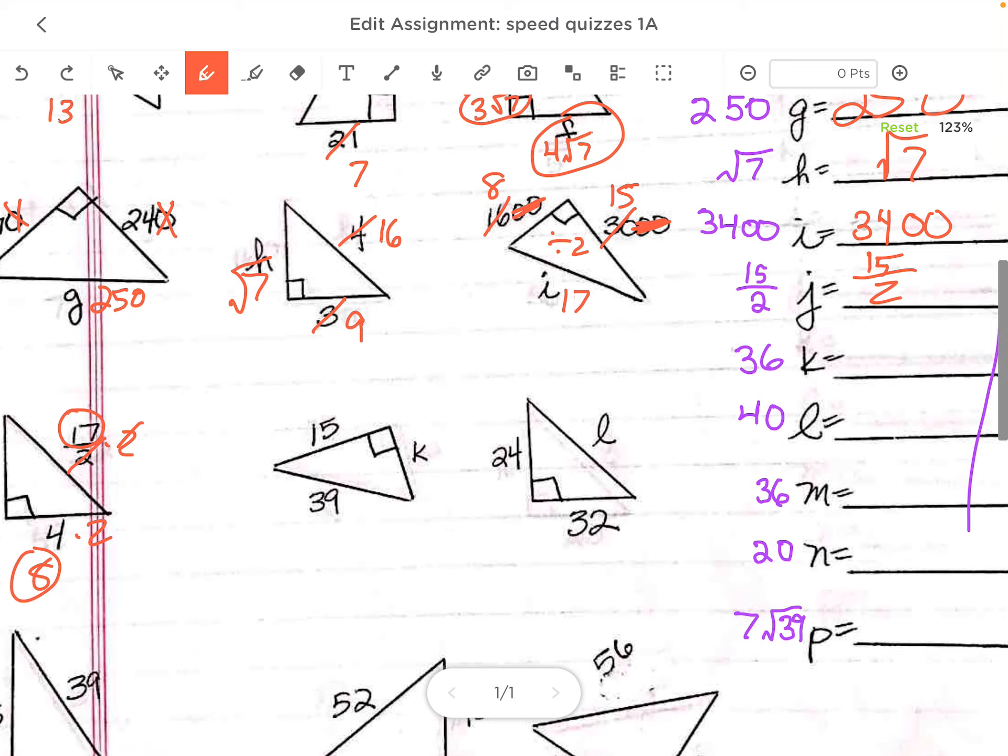I'm looking at the next one. 15, 39. Each of these can be divided by 3, 5, 13. So ask yourself, is there a 5-something 13? There is. It's a 5, 12, 13. Because I divided by 3, I have to multiply by 3, get 36.